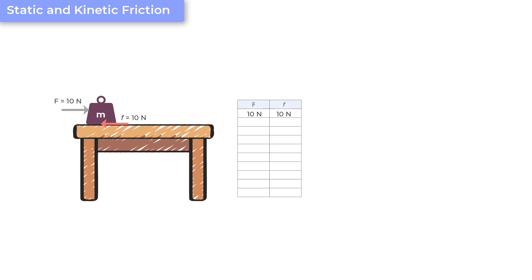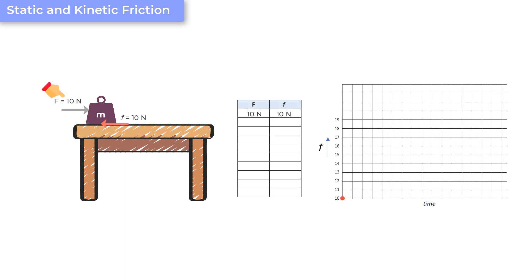Moving forward, now let us say you increase this force to 11 N, and you find the box is still not moving. And why is it not moving? Because now the force of friction has also increased to 11 N to oppose the force you are putting on the box. Now, let us say you decide to take the force up to 12 N, and the box still does not move. And you know why. Because the force of friction has also increased to 12 N.